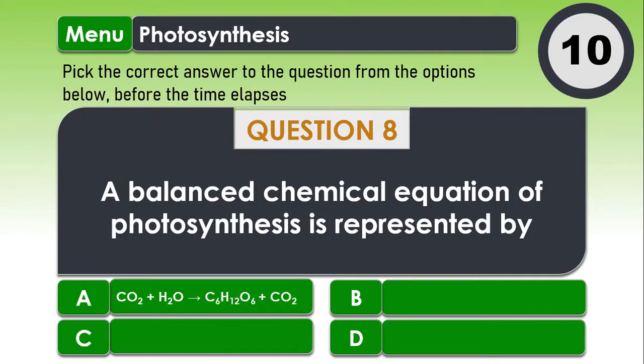Question 8. A balanced chemical equation of photosynthesis is represented by A. CO2 plus H2O to give us C6H12O6 plus CO2 B. 2CO2 plus 2H2O to give us C6H12O6 plus O2 C. 6CO2 plus 6H2O to give us C6H12O6 plus 6O2.